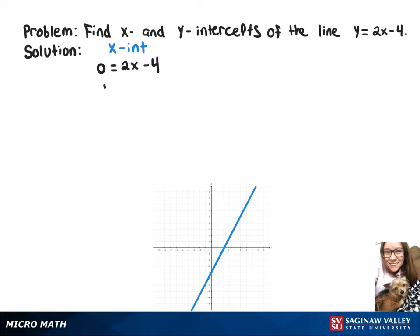Adding 4 to both sides gives 4 equals 2x, and then dividing both sides by 2 gives us 2 equals x. So our x-intercept is (2, 0).